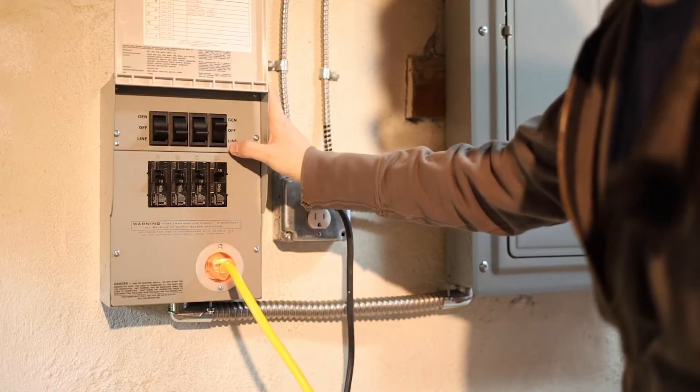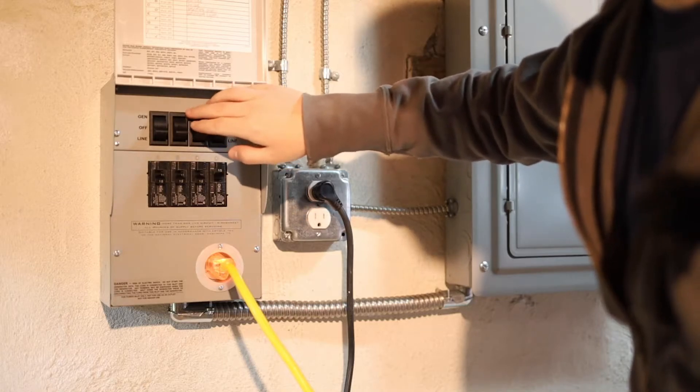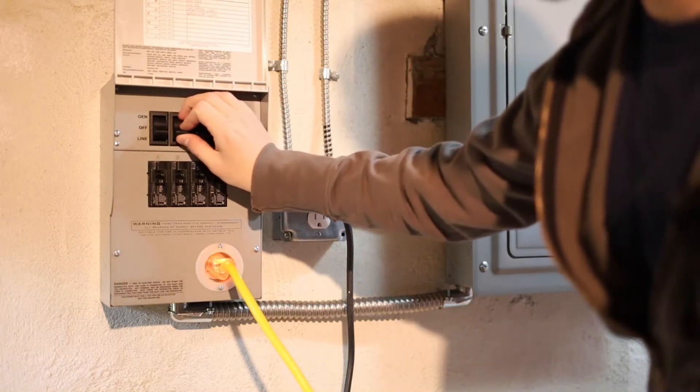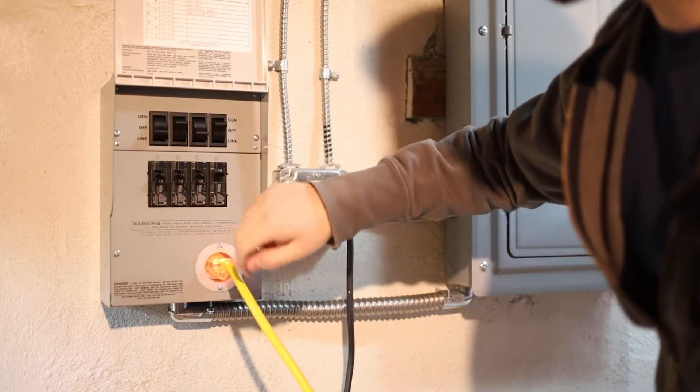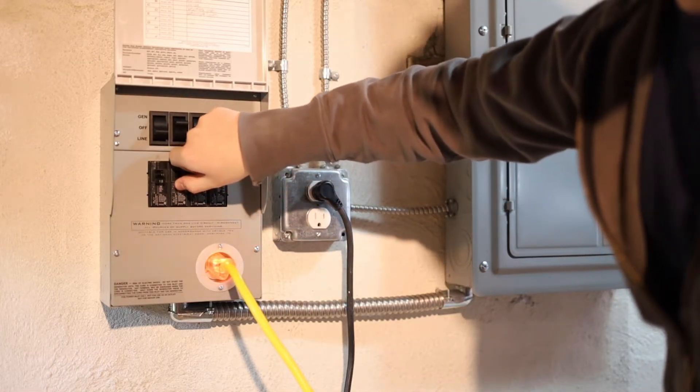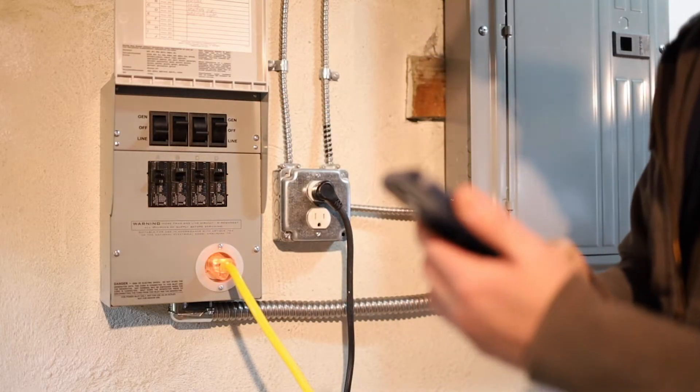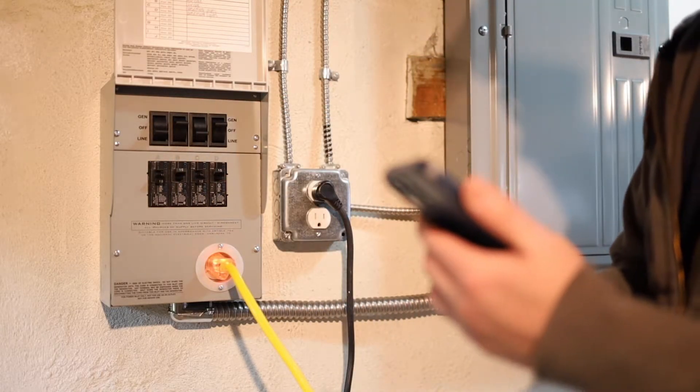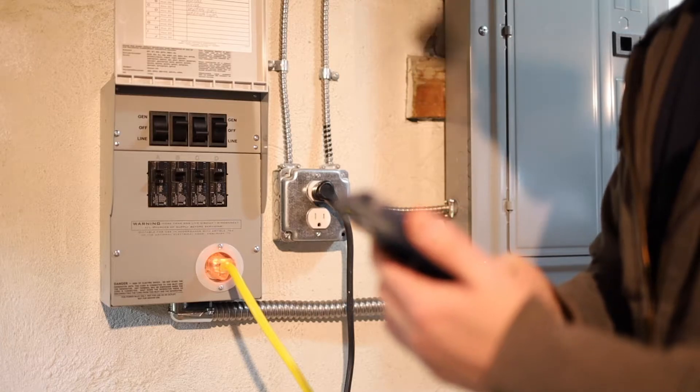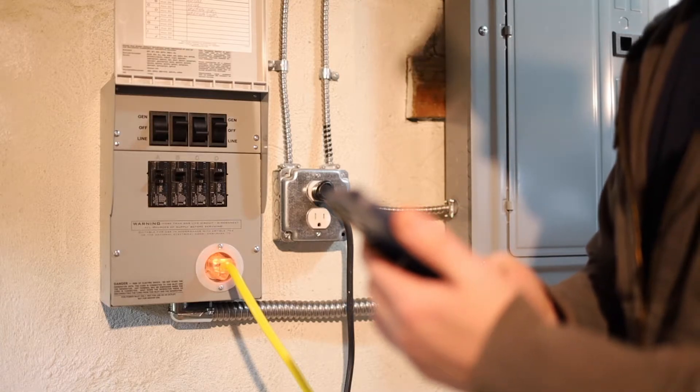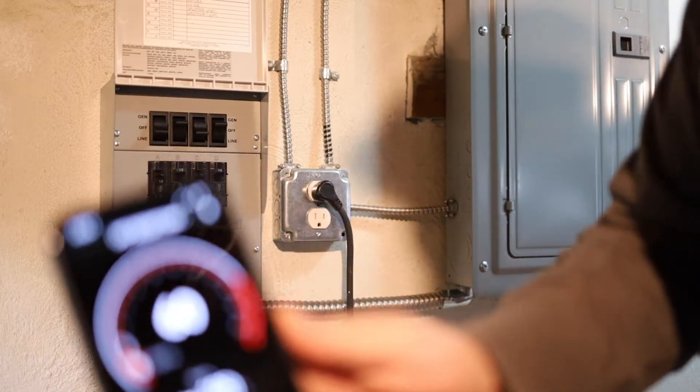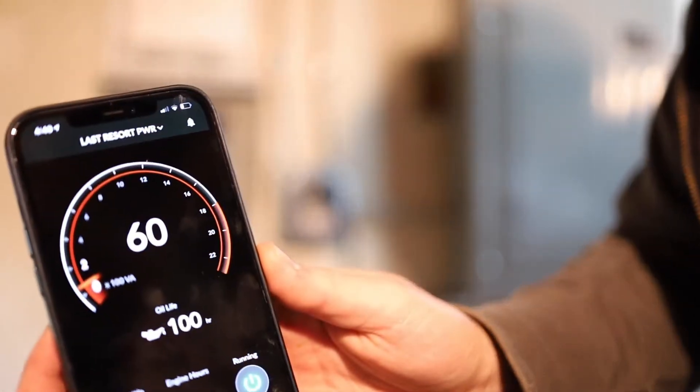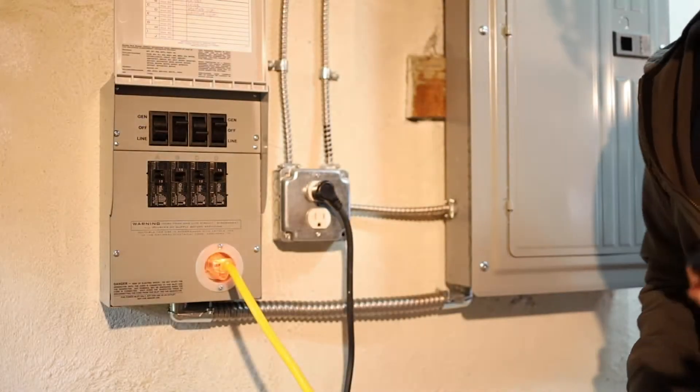I guess I'll start with the fridge since that's probably going to be the highest draw. So switch this to off. Oh. I accidentally skipped off and went straight to generator. But the circuit's off. Okay. That should be on the generator now. And we should see the power increase. It's going up. It went up a little bit. But I would have expected more than that. I'm going to go make sure my fridge is actually working.